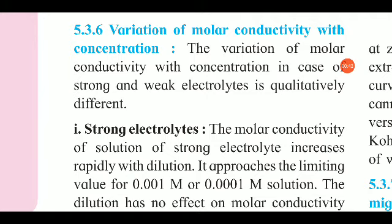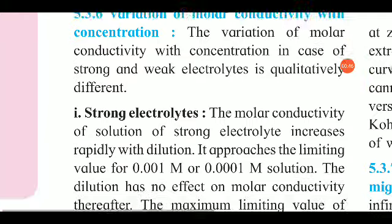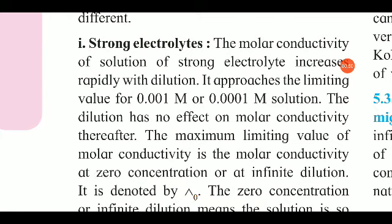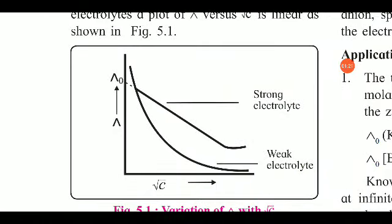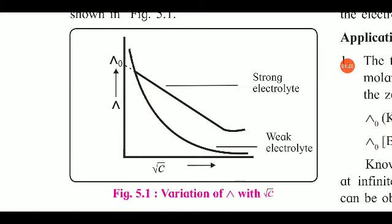The variation of molar conductivity with concentration is qualitatively different for strong and weak electrolytes. The molar conductivity of a solution of a strong electrolyte increases rapidly with dilution. The curve we are going to plot shows this variation. This graph shows lambda versus square root of C, that is molar conductivity versus concentration.